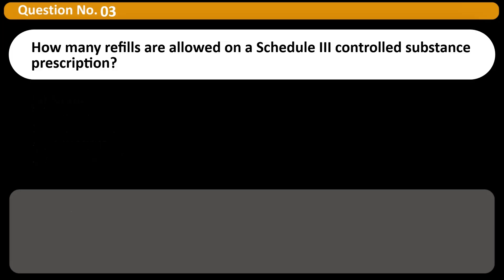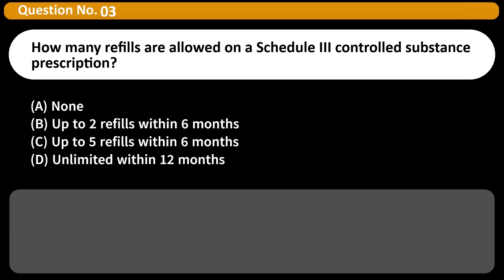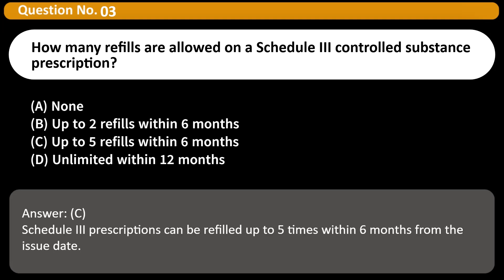How many refills are allowed on a Schedule 3 controlled substance prescription? A. None. B. Up to 2 refills within 6 months. C. Up to 5 refills within 6 months. D. Unlimited within 12 months. Answer: C. Schedule 3 prescriptions can be refilled up to 5 times within 6 months from the issue date.